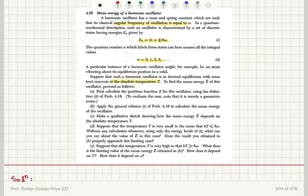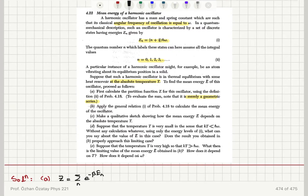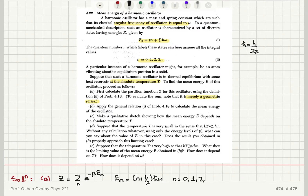First, calculate the partition function of this oscillator. The partition function Z is the sum over all possible states of e to the minus beta E_n, where the energy levels are (n + 1/2) h-bar omega, with omega the angular frequency, h-bar Planck's constant divided by 2 pi, and the quantum number n varies from 0, 1, 2, 3, all the way up to infinity.